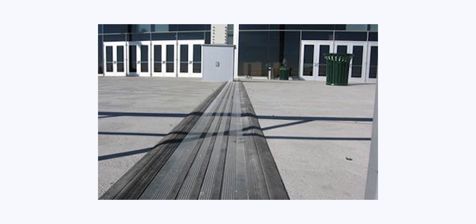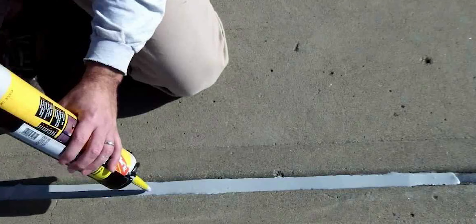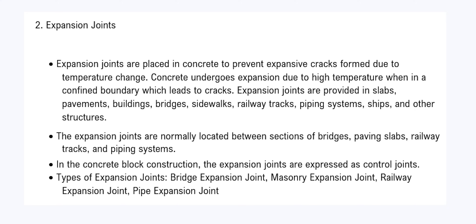In concrete block construction, expansion joints are expressed as control joints. There are mainly four types of expansion joints: bridge expansion joint, masonry expansion joint, railway expansion joint, and pipe expansion joint.